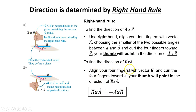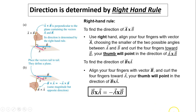To find the direction of b cross a, you line the four fingers with vector b first, then curl toward a. When you do that, your thumb should be pointing downward. As you can see, a cross b is exactly opposite to b cross a. So b cross a equals negative a cross b — they are inverse vectors.